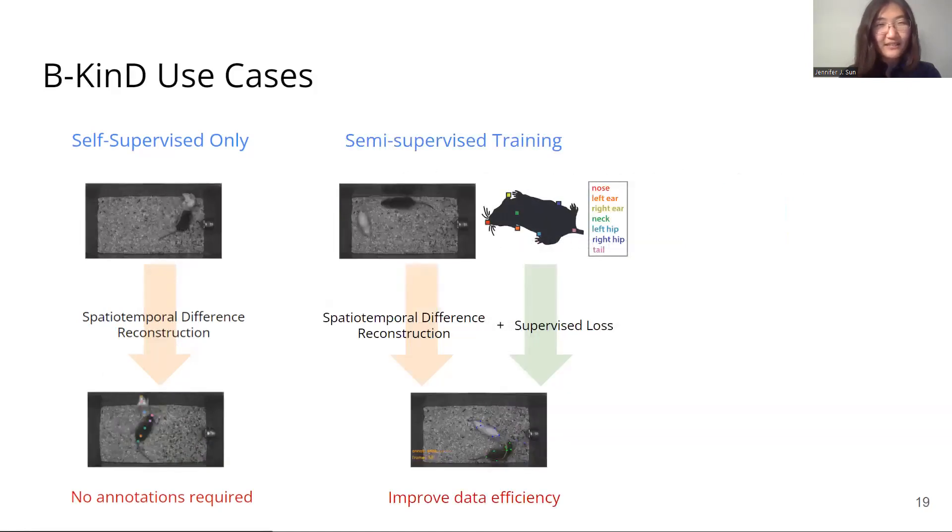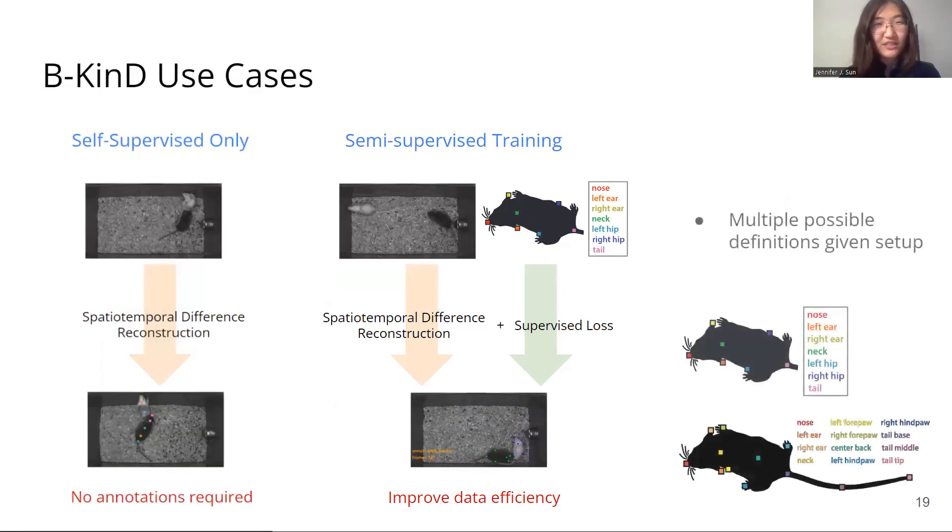Another potential use case is BeKind in a semi-supervised setting. The self-supervised part from BeKind can improve data efficiency of the supervised annotations. However, the best location to track for a given video setup may not be clear ahead of time.